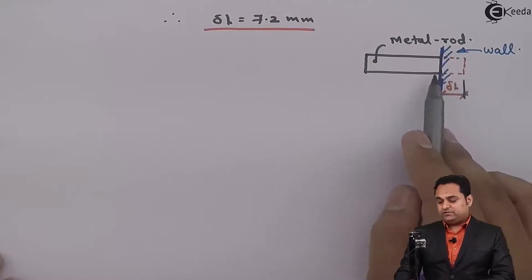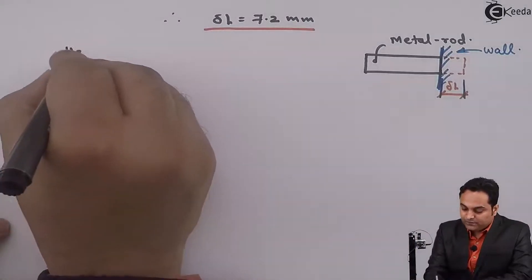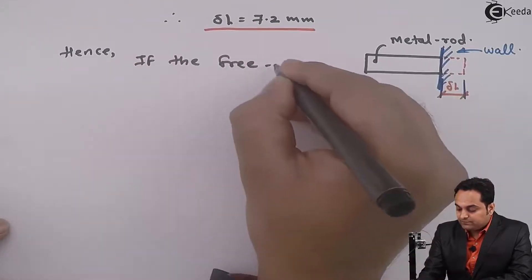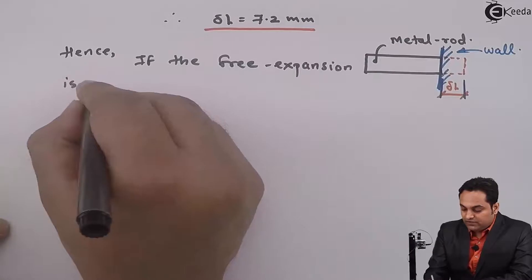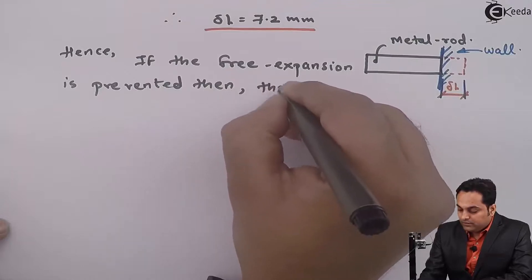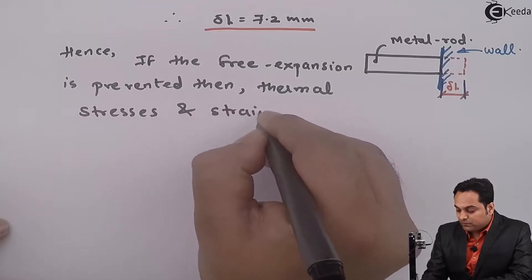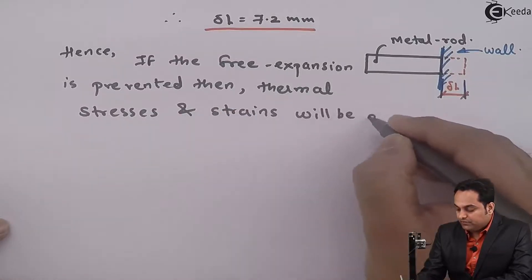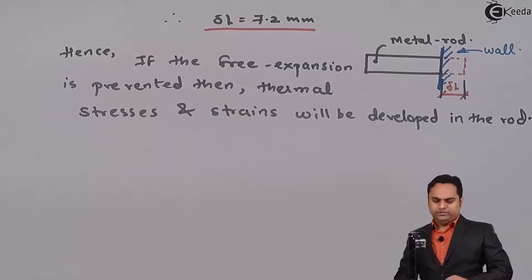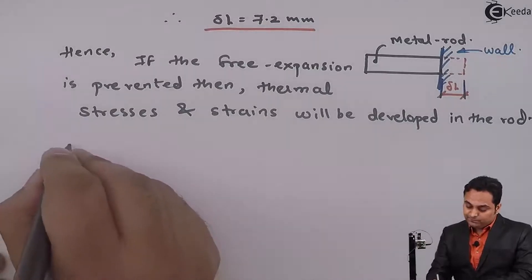So, because of this wall, this metal rod won't be able to expand by delta L. And hence, I can say that, hence, if the free expansion is prevented, then thermal stresses and strains will be developed. We need to find the value. So, first, I will say that, therefore, thermal strain is equal to α × ΔT.